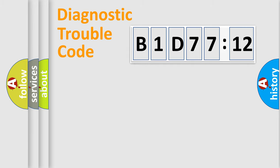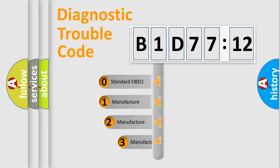Powertrain, Body, Chassis, Network. This distribution is defined in the first character code.